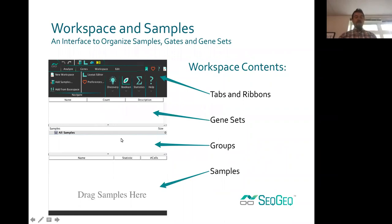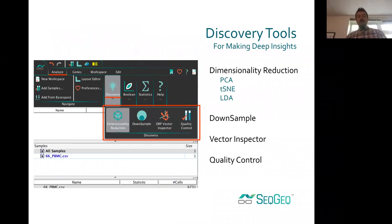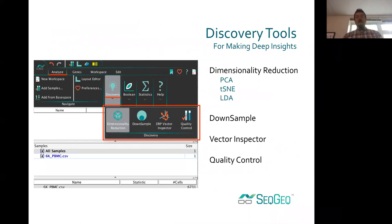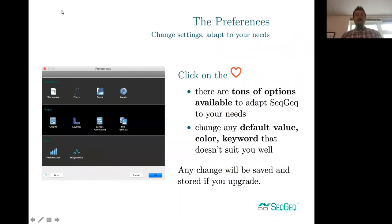We also have an area for samples or groups and samples. This is where you're going to do most of the work in analysis, at least to begin with. There are also discovery tools available, including dimensionality reduction — a key starting point to most single-cell RNA-seq analyses — as well as downsampling, a vector inspector for principal components, and quality control, which we highly suggest you utilize. Within preferences, accessed via the little red heart icon in the top right, you can change various default settings.